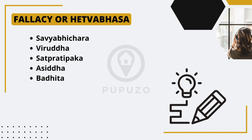Siddhpratapaka, also known as the fallacy of false comparison, occurs when an argument makes an invalid comparison between two things or situations. This fallacy arises when the comparison lacks a valid basis or when the two things being compared are not truly comparable. For example, if someone argues that driving a car is like flying an airplane and therefore both require the same level of training, it would be a false comparison since driving a car and flying an airplane involve different skills and training requirements.